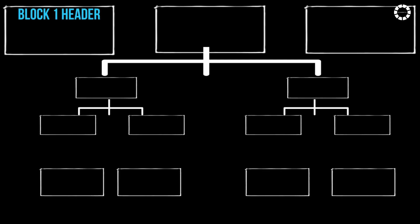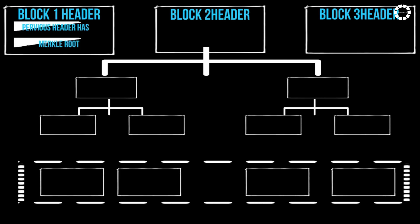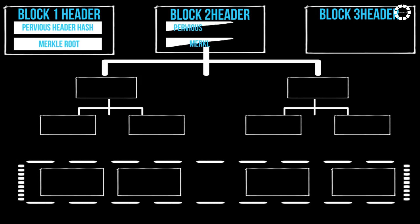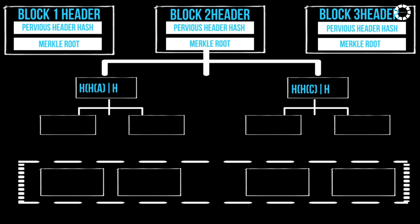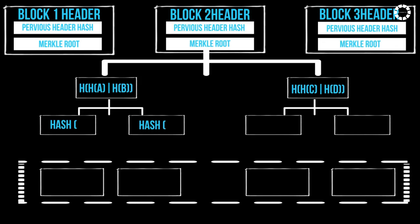The process involves hashing each block's number, time, transaction hash, and received hash, then creating a Merkle root of these hashes.